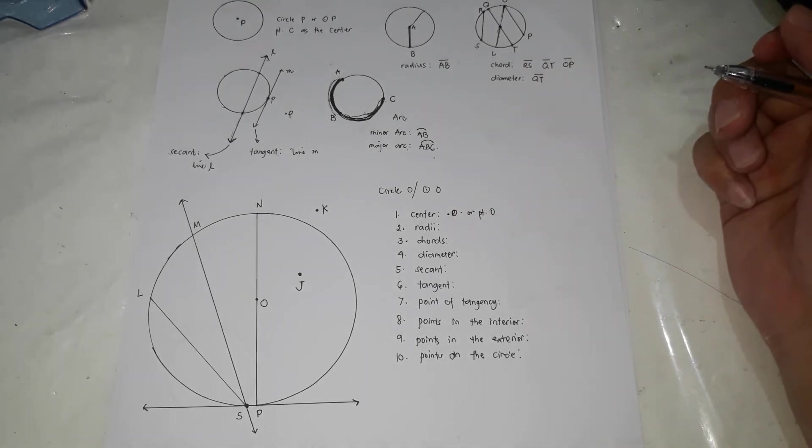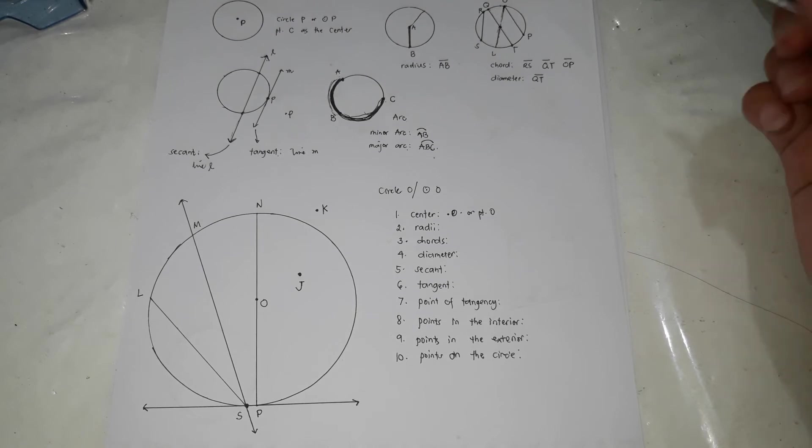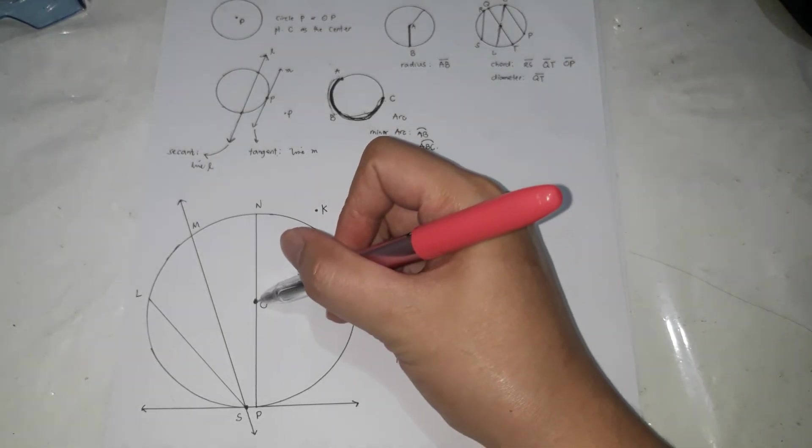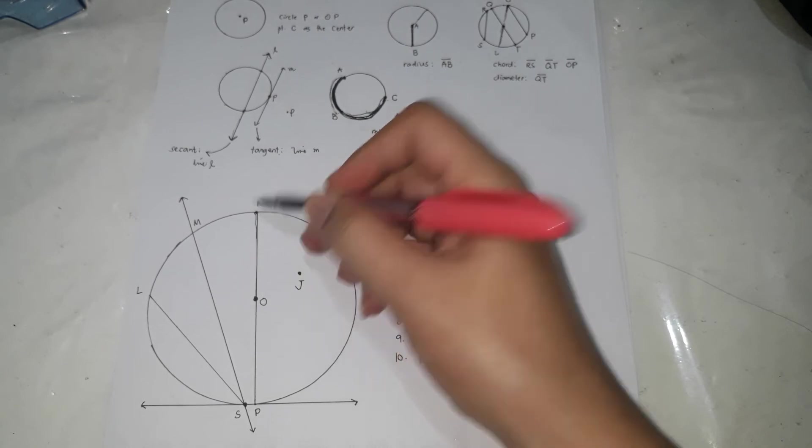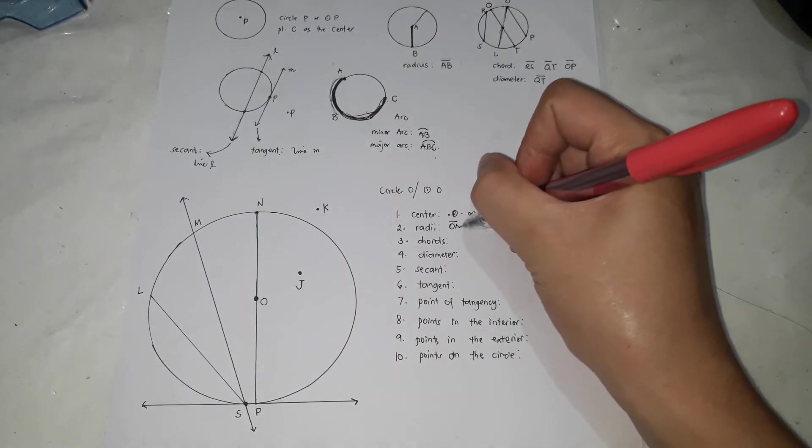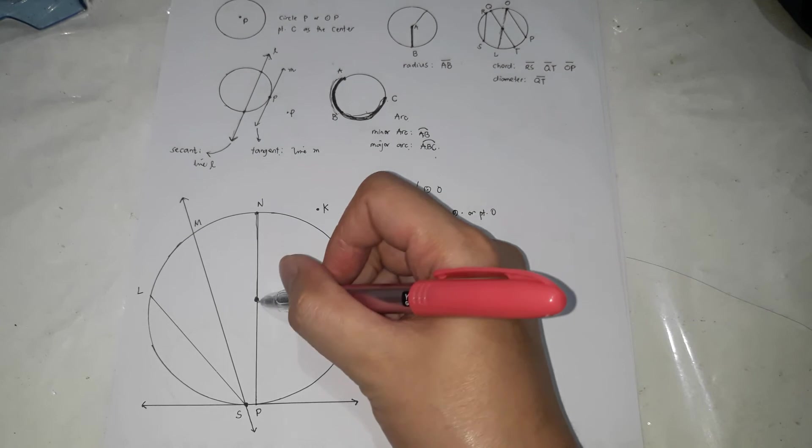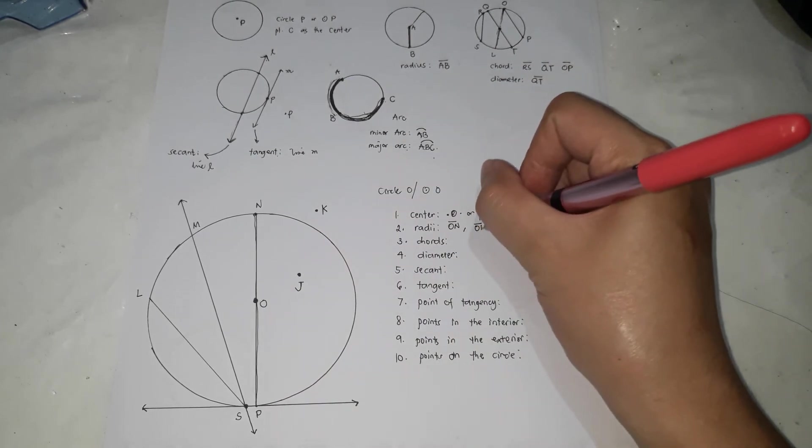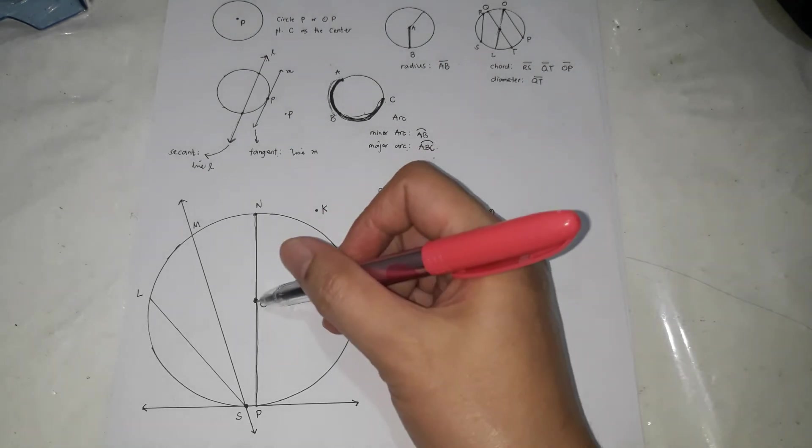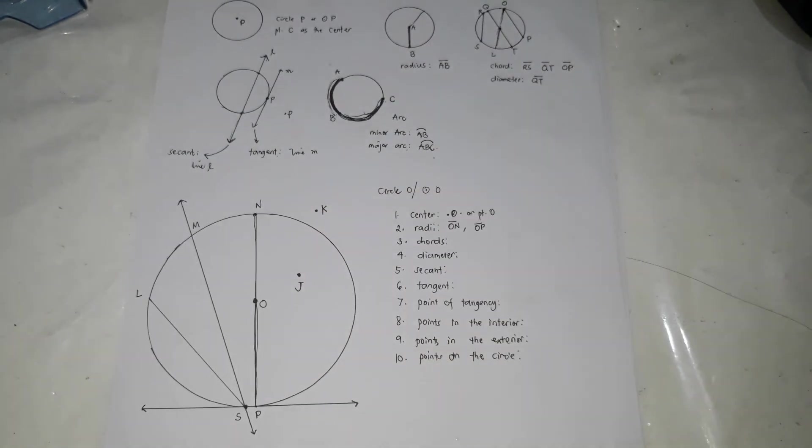Radii. Give me two radii or radius. Give me a radius. First is, it should be from the center towards any part of the circle. So this is O, N. And O, P. Or P, O, or O, P. Again, from the center towards any part of the circle. So the line segment like that, that's radii.